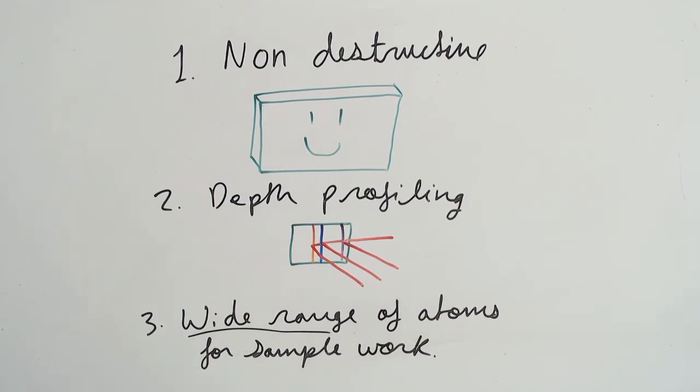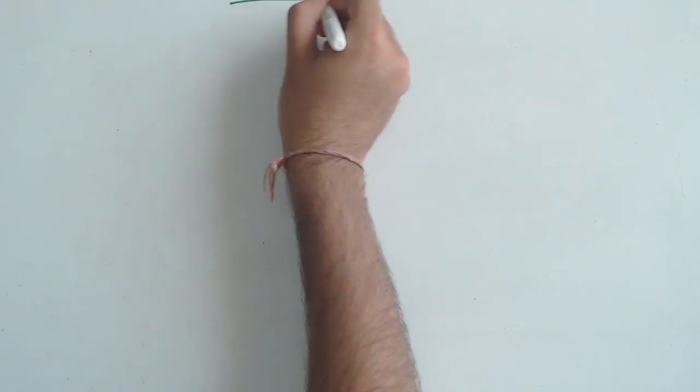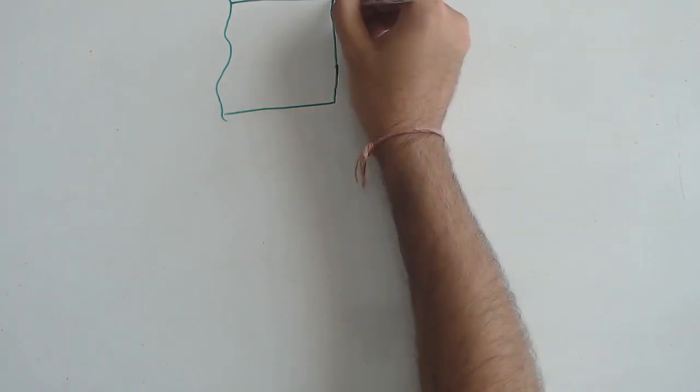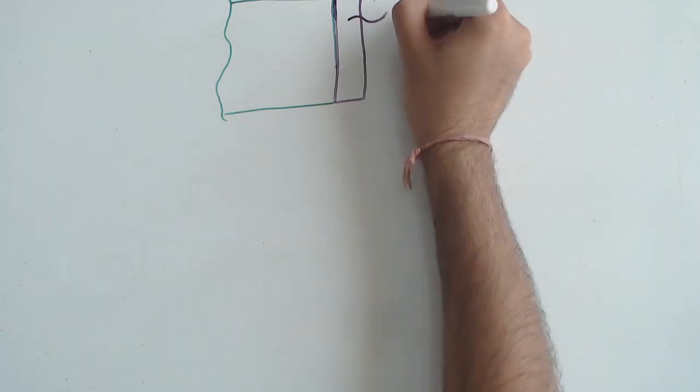So, what does the data actually look like? Let's take an example of a thin gold layer atop a silicon substrate. Let's start with gold.